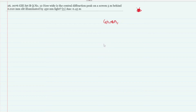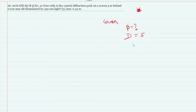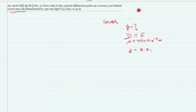The central diffraction peak width is what we need to find. The screen is 5 meters behind the slit, so the distance D is 5 meters. The slit width is 0.01 mm, and the wavelength of light is 450 nm, which is 450 × 10⁻⁹ meters.